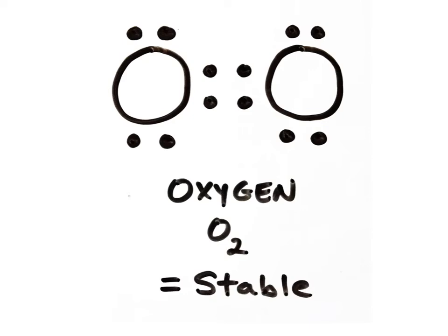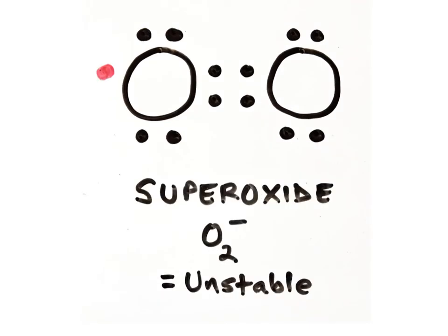Oxygen gas, as shown here in this electron dot diagram, is a stable molecule containing paired electrons in its outermost shell. An example of a free radical is superoxide, which is an oxygen molecule with an extra unpaired electron in its outermost shell. It's symbolized by adding a negative charge superscript to the molecular formula for oxygen gas. Because of this extra electron, free radicals are unstable and highly reactive.